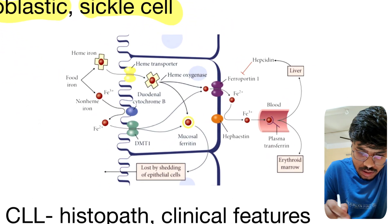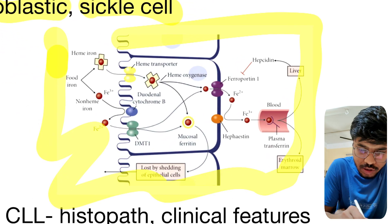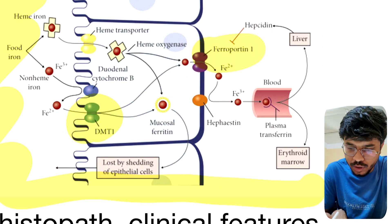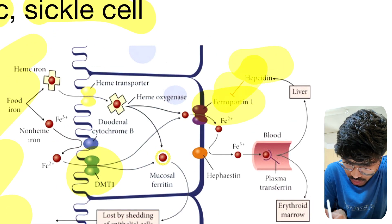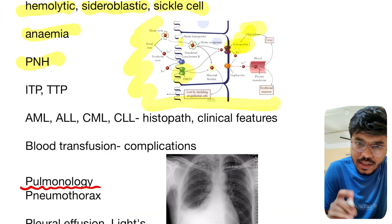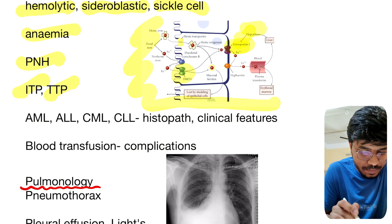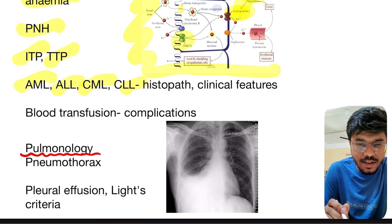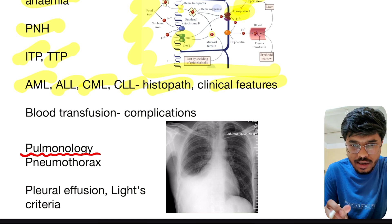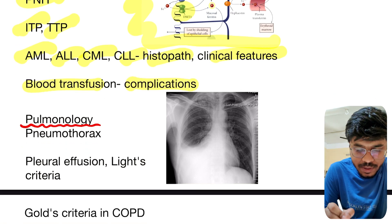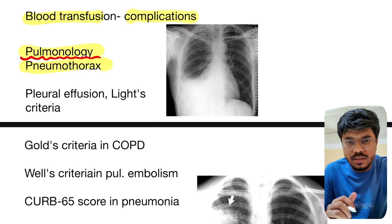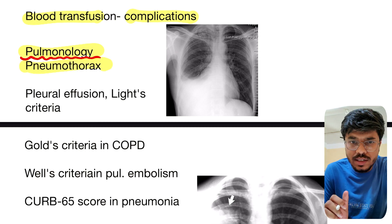This is the picture of iron absorption — DMT1 and ferroportin are the two very very important molecules. Hepcidin usually inhibits ferroportin — this is also again important. PNH, ITP, TTP, AML, and CML — all four are very very important, histopathology with clinical features. Blood transfusion complications — again important.